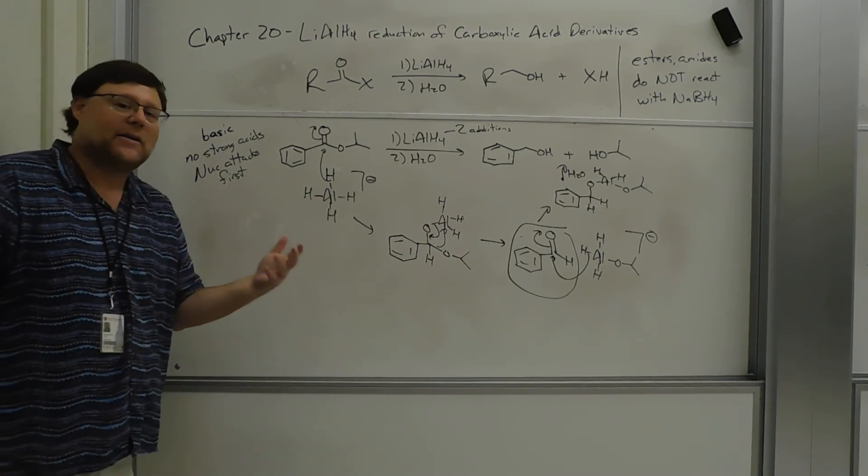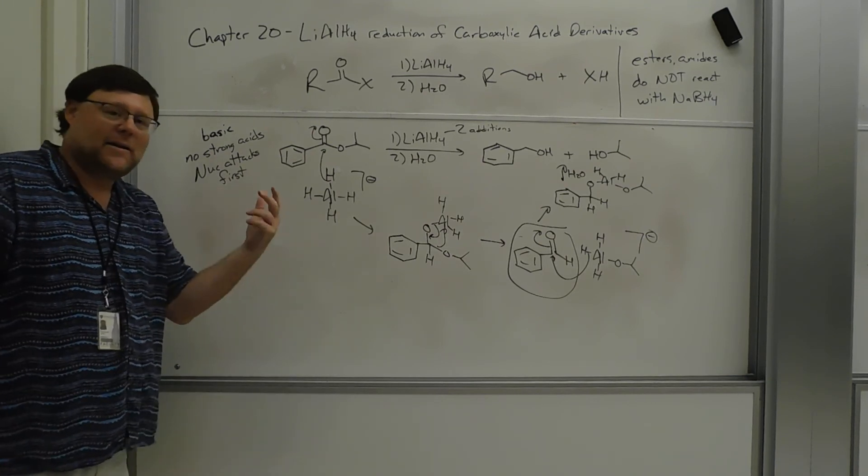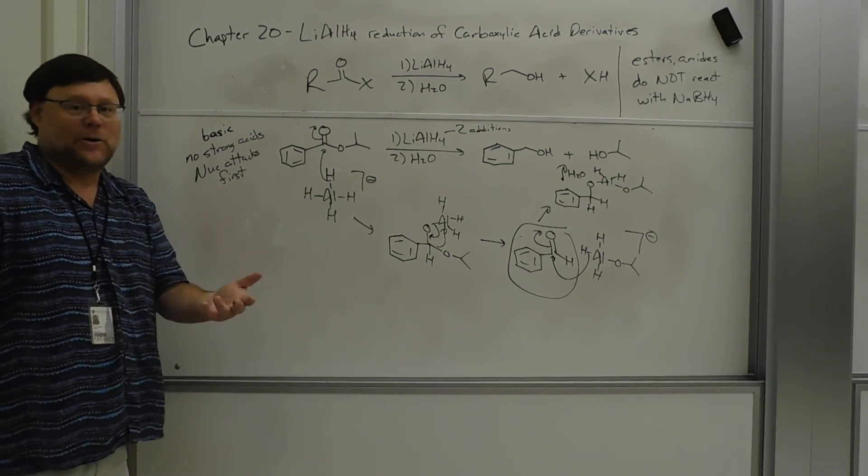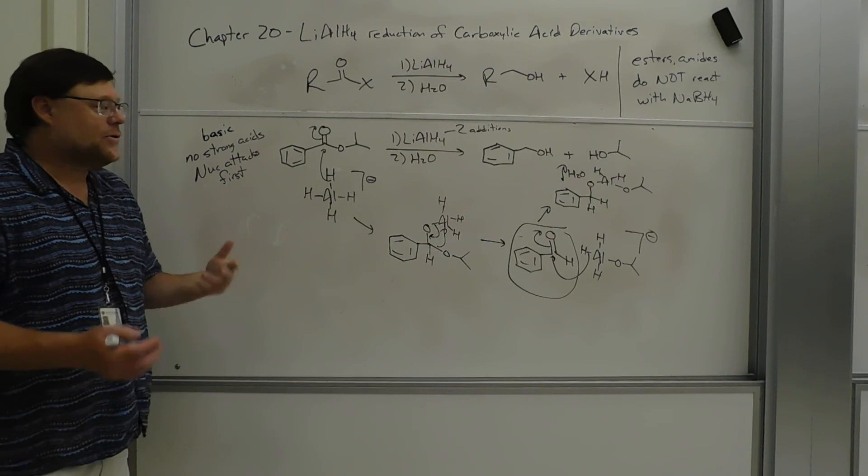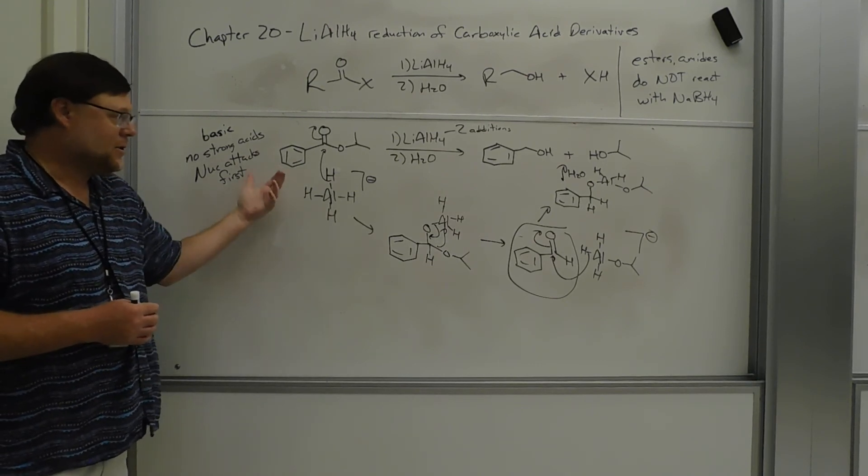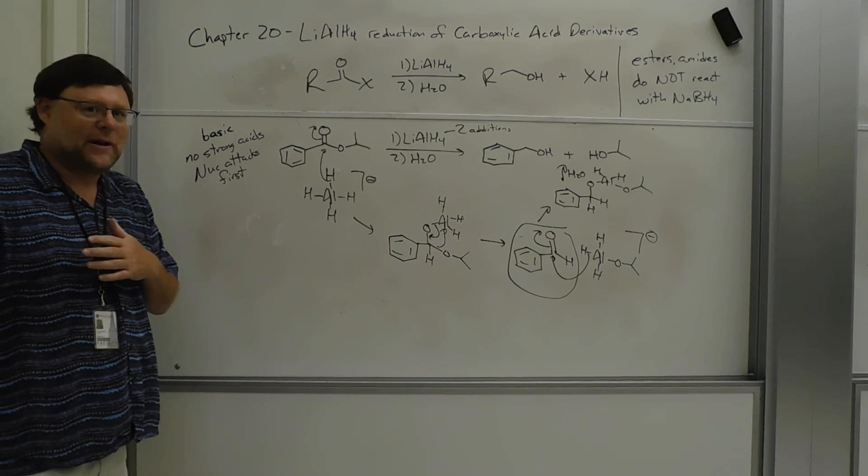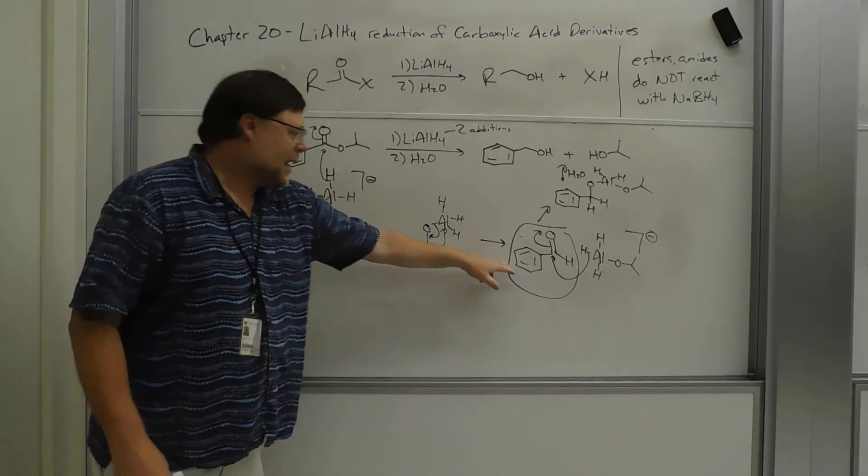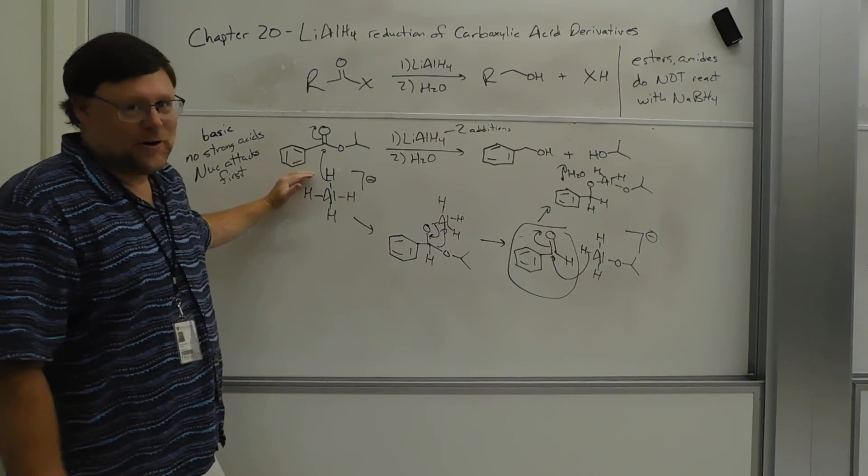It's exactly like in the Grignard reaction, right? The Grignard adds in. You kick out a leaving group, and now you have a ketone. Well, ketones are a lot more susceptible to nucleophilic attack than are esters, and so that ketone is going to react faster than the ester. This aldehyde is going to react way faster than the ester did.